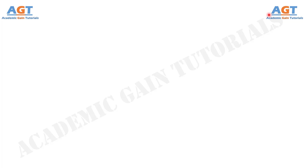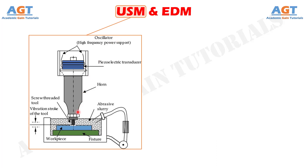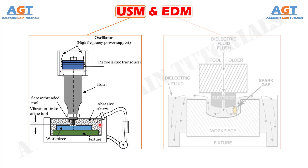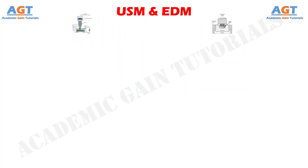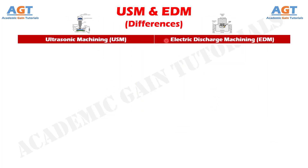Welcome to Academic Game Tutorials. In this video, we will look into the differences between ultrasonic machining and electric discharge machining. Ultrasonic machining is a subtractive manufacturing process that removes material from the surface of a part through high frequency, low amplitude vibrations of a tool against the material surface in the presence of fine abrasive particles. Electrical discharge machining is a controlled metal removal process used to remove metal by means of electric spark erosion, where an electric spark is used as the cutting tool to produce the finished part to the desired shape. Let's look into the basic differences in a tabular form.